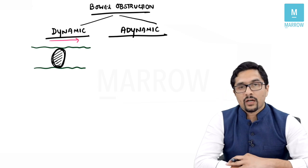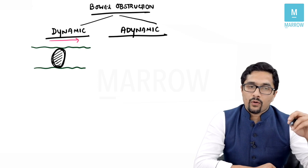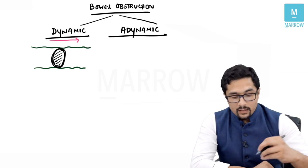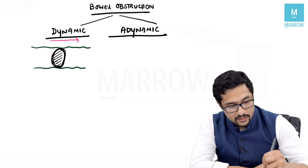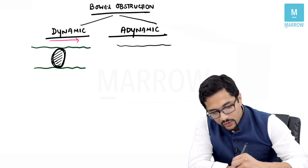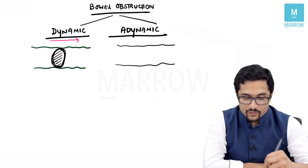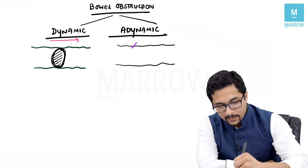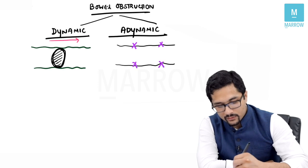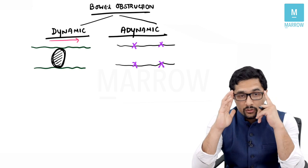There is something obstructing the flow of feces — there is a physical obstruction, like a traffic jam. Adynamic obstruction means there is no traffic, there is no physical obstruction, but the bowel wall is not contracting. So the battery is dead — the wall is not contracting.